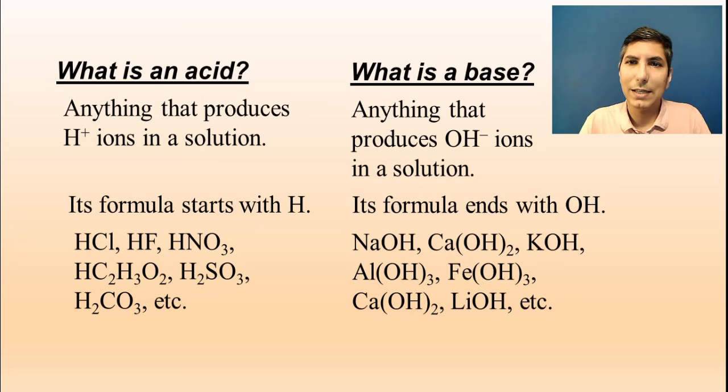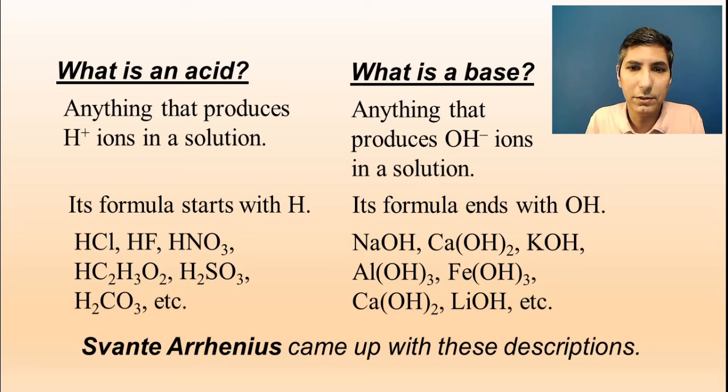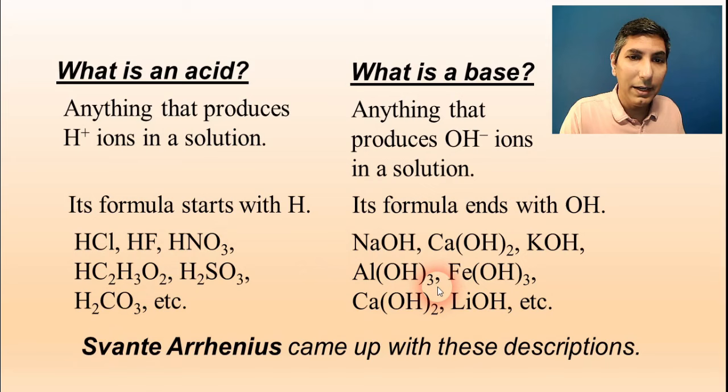Now, the person who came up with these descriptions was a Swedish chemist named Svante Arrhenius, who came up with that well over 100 years ago. So when we think about acids and bases, we can call these Arrhenius acids and Arrhenius bases.